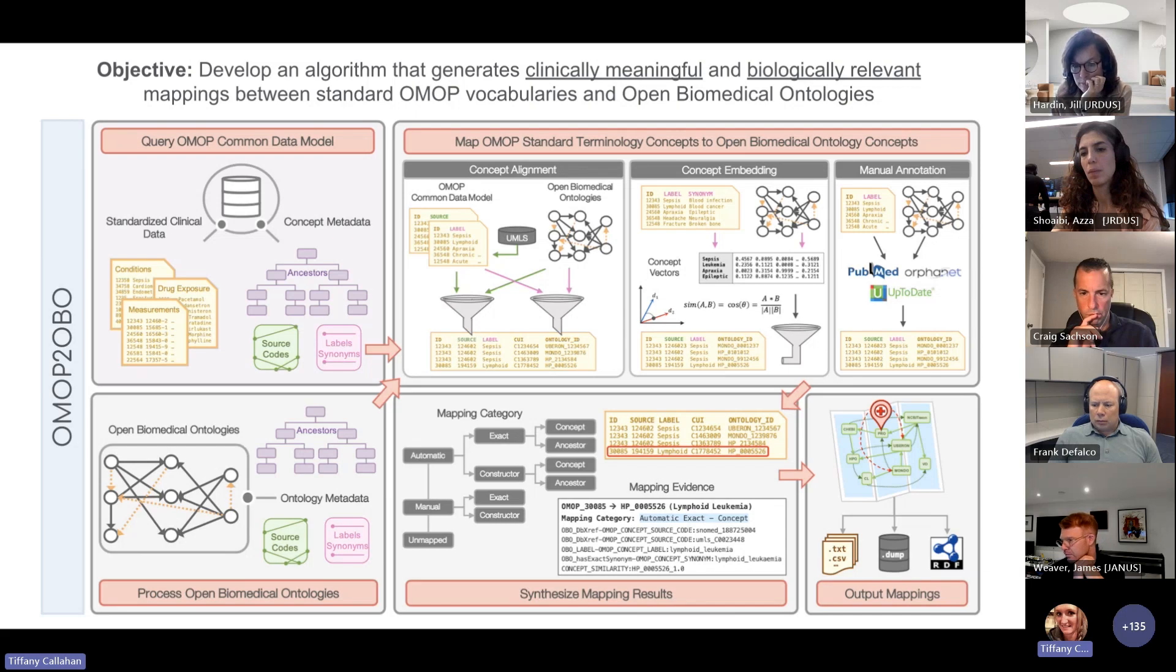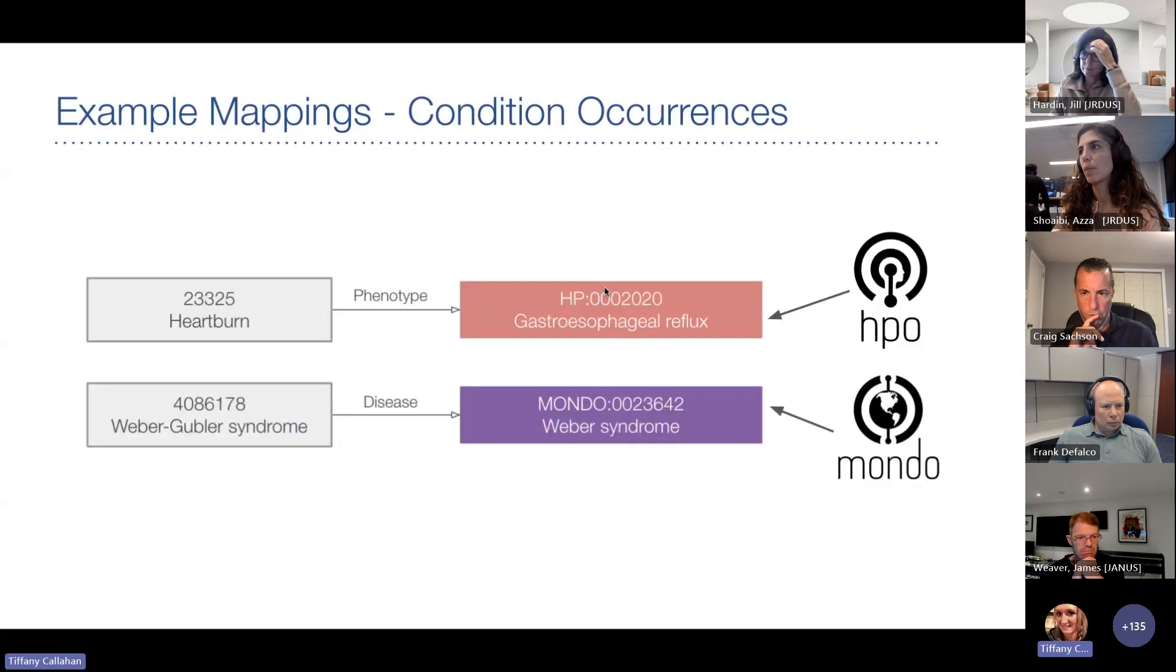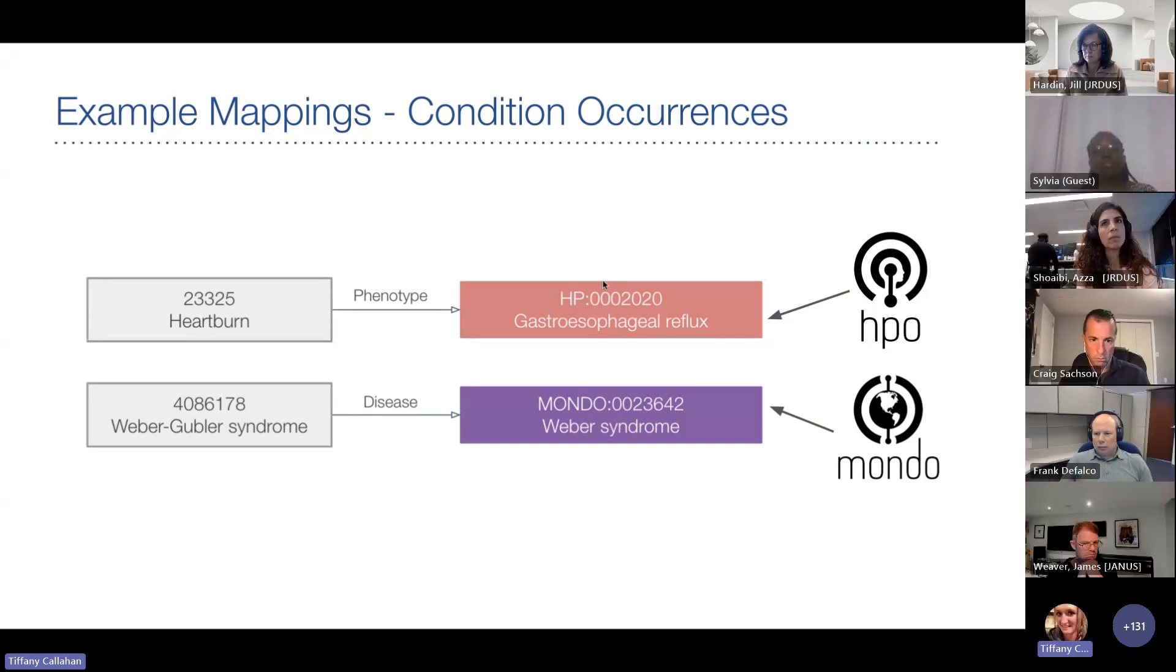So before diving into the results, I'll present some examples of what these mappings look like. So condition occurrence concepts were mapped to two ontologies, the human phenotype ontology and the Mondo disease ontology. And the example on the screen show one mapping to each of these ontologies. And note that these are meant to show when mappings go perfectly correct. So these are exact mappings, they're high confidence. And those were most often the kind of mappings we obtained for this domain. And they only get more complicated as we progress to the other domains.